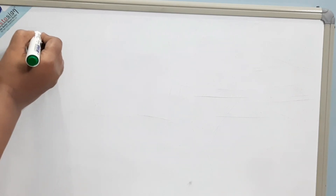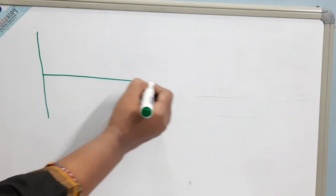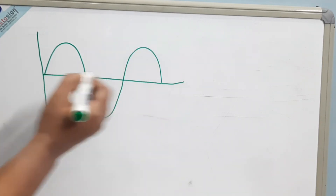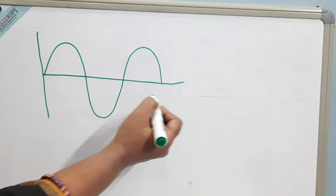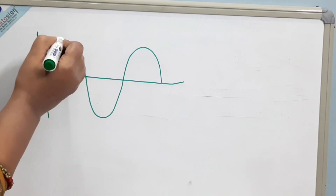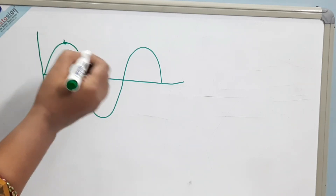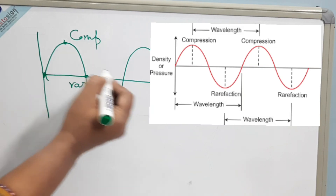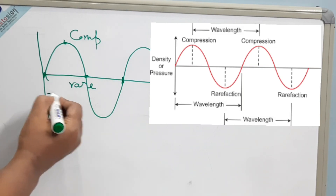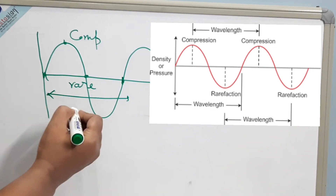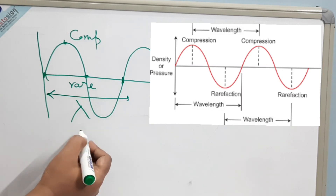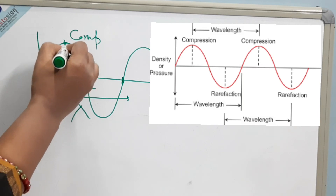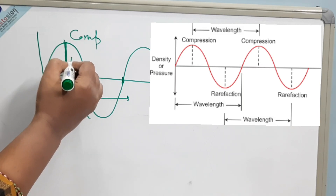Now I will draw a sound wave. This is a sound wave. This curve is known as a sine curve. And this point is known as the compression point. The distance between two similar points is known as wavelength, and the symbol for that is lambda. And the maximum displacement from the mean position is known as amplitude.